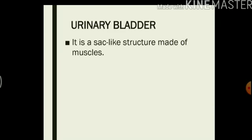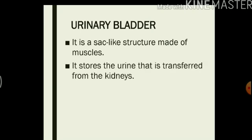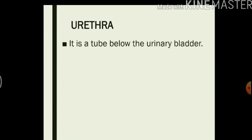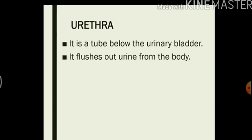The urinary bladder is a sac-like structure made of muscles. It stores the urine that is transferred from the kidneys. From here it is flushed out of the body. Urethra — it is a tube below the urinary bladder. It flushes out urine from the body. So this is how the kidneys, the ureters, the bladder and the urethra work together to flush out toxins from our blood in the form of urine.